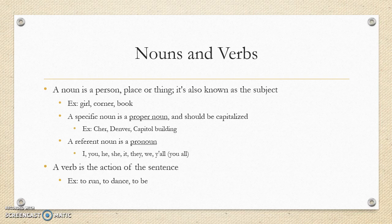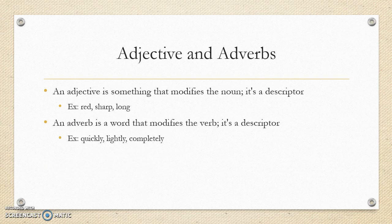A verb is the action in a sentence — it's also the beginning of the predicate. So with a girl, a corner, a book, each is doing something: the girl is running, the book is dancing in a Disney movie, and the corner is existing. Verbs show what the subject is doing.